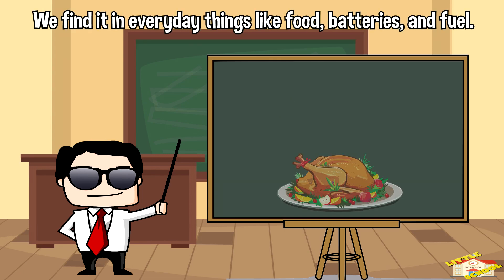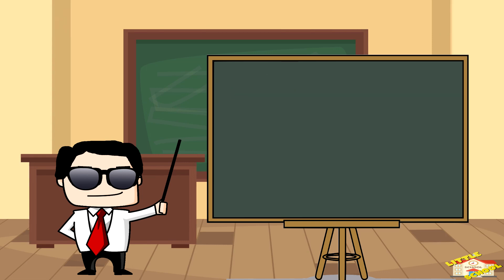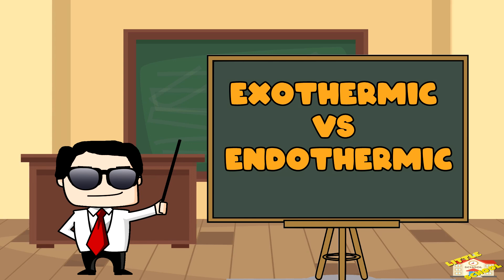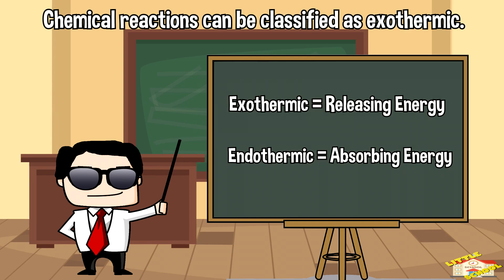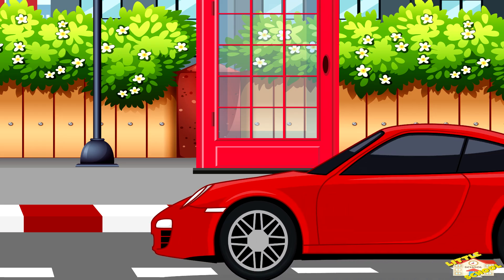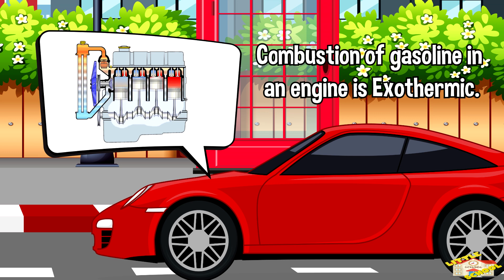Exothermic versus endothermic: chemical reactions can be classified as exothermic, which is releasing energy, or endothermic, which is absorbing energy. For example, the combustion of gasoline in an engine is exothermic.